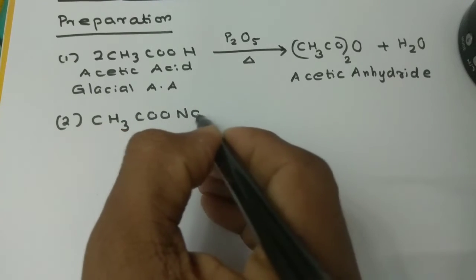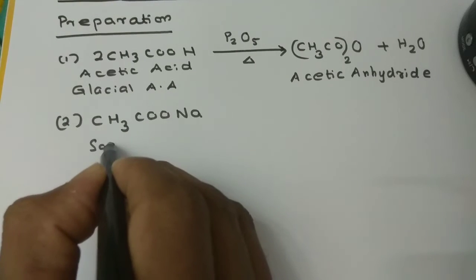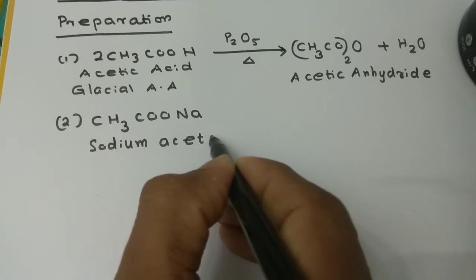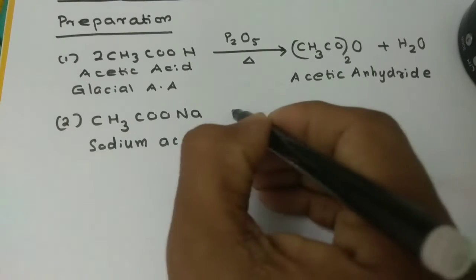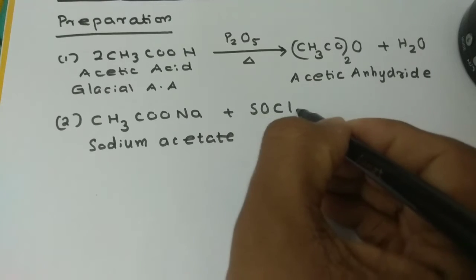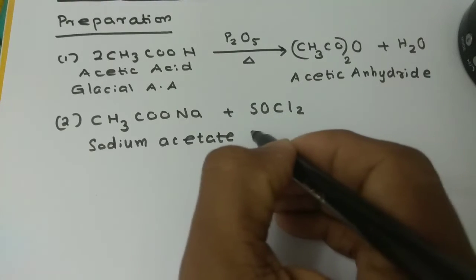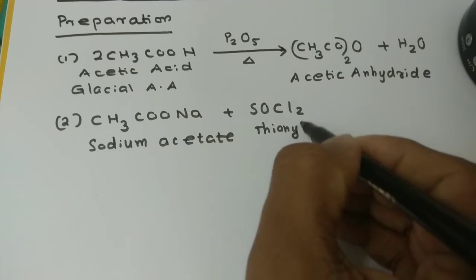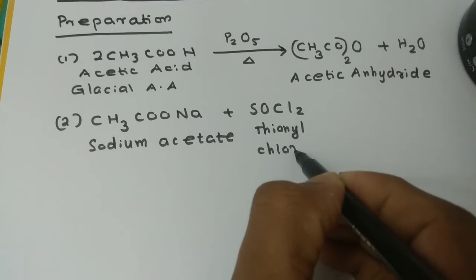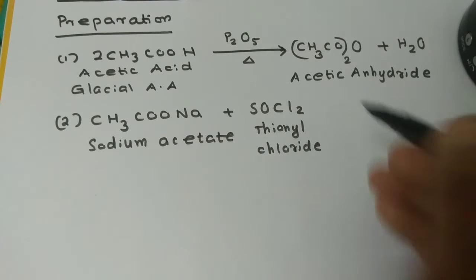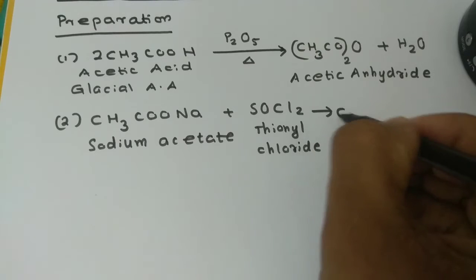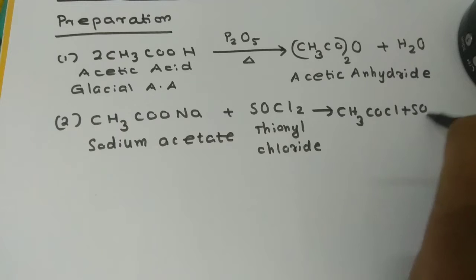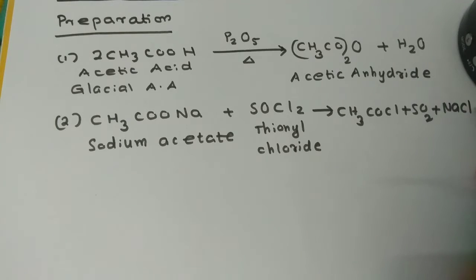CH₃COONa is sodium acetate. Sodium acetate reacts with SOCl₂ — Thionyl Chloride. We add Thionyl Chloride to the reaction, giving CH₃COCl plus SO₂ plus NaCl.